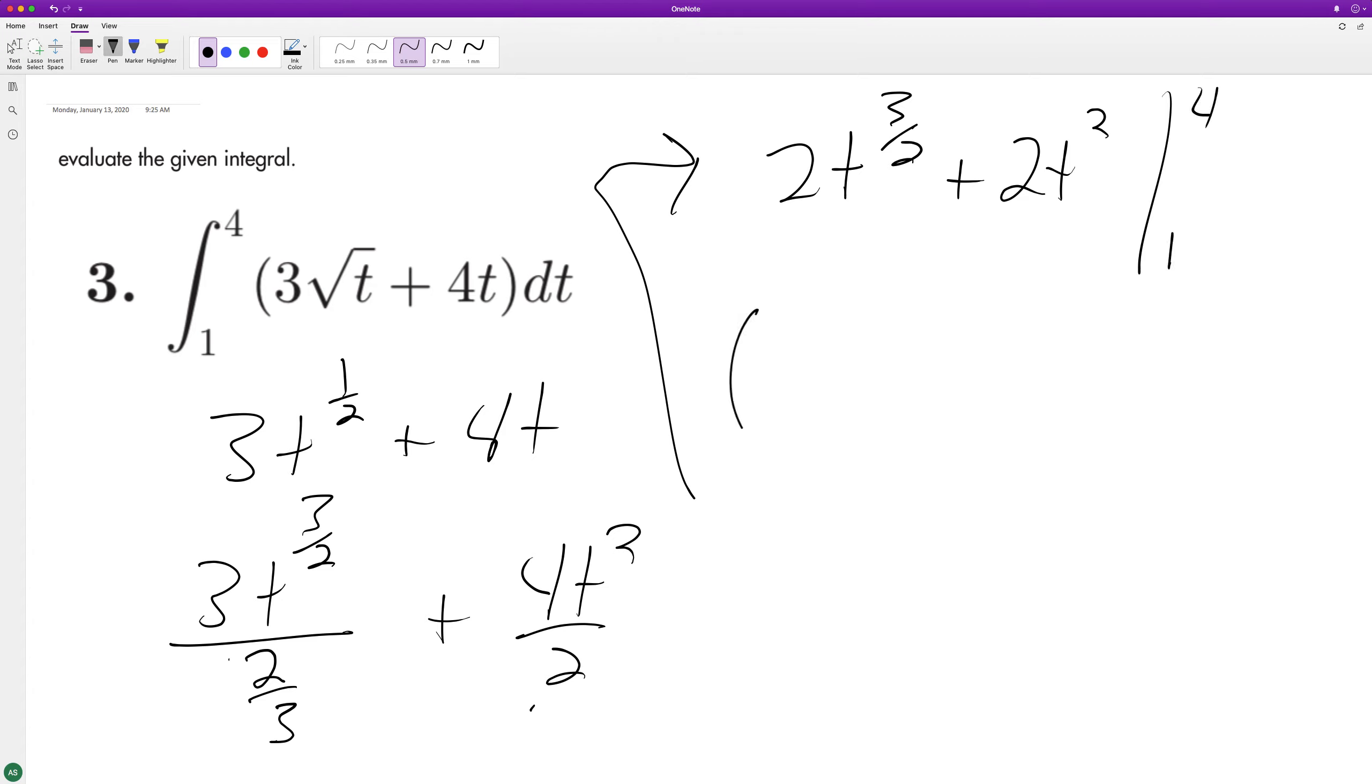So we get, this ends up being 16 plus 32 minus four. So we end up with 48 minus four, which is equal to 44 and that's it.